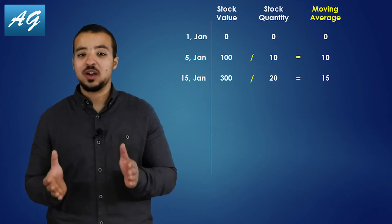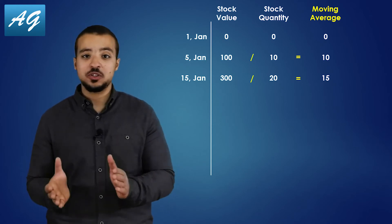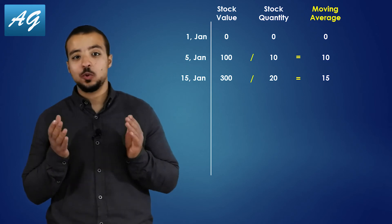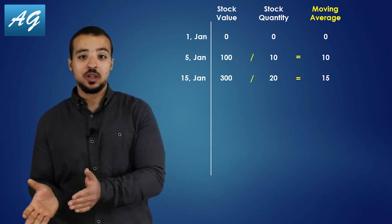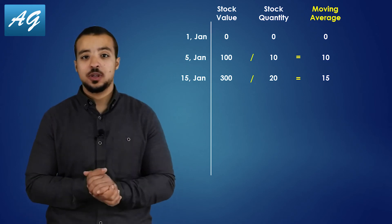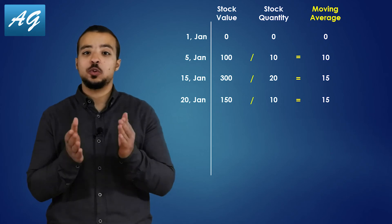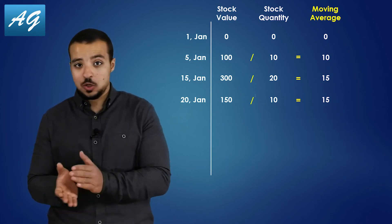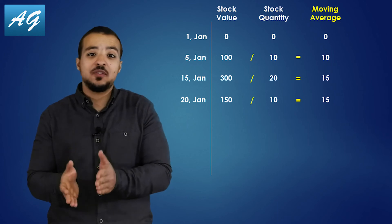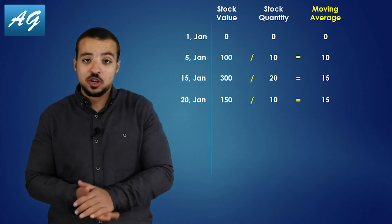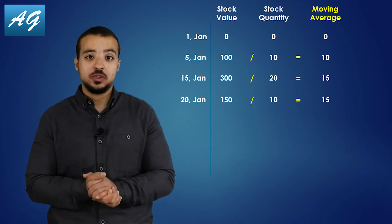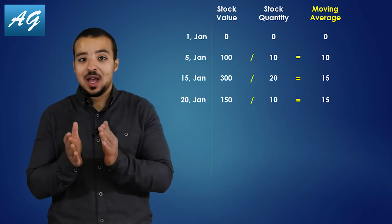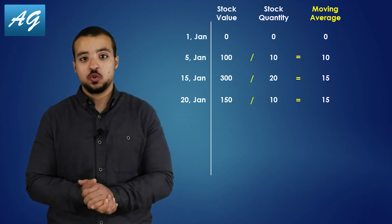Now you understand that the moving average cost changes when we do any goods receipt to the system. Let's assume that on the 20th of January, we sold 10 chairs. So the total value of stock is going to decrease by 10 multiplied by 15 USD, which is our moving average on the 20th of January — that's 150 USD. As you can see, the selling transaction has no impact on our moving average cost.